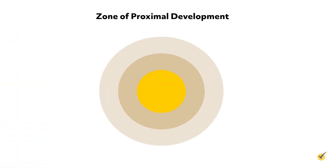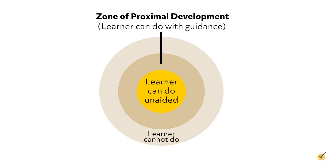Vygotsky also explained that learning activities should occur within a student's Zone of Proximal Development. This is the zone in which the student can complete an activity with some assistance from a more knowledgeable other. In other words, a learning activity should not be so easy that a student can complete it independently without learning anything new. Similarly, it should not be so difficult that it is out of reach even with assistance from others.